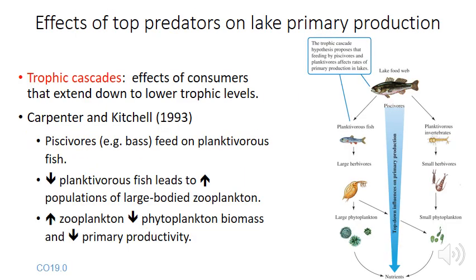A good example of top-down control was demonstrated by Carpenter and Kitchell, who developed the trophic cascade hypothesis — the idea that the effects of consumers extend down to lower trophic levels. They studied a simple lake ecosystem made up of large fish feeding on smaller fish, which fed on zooplankton, which fed on phytoplankton. The hypothesis is that increasing the population of large piscivorous fish would reduce smaller fish, free up zooplankton from predation, and those zooplankton would then feed more heavily on phytoplankton, thereby reducing primary productivity.